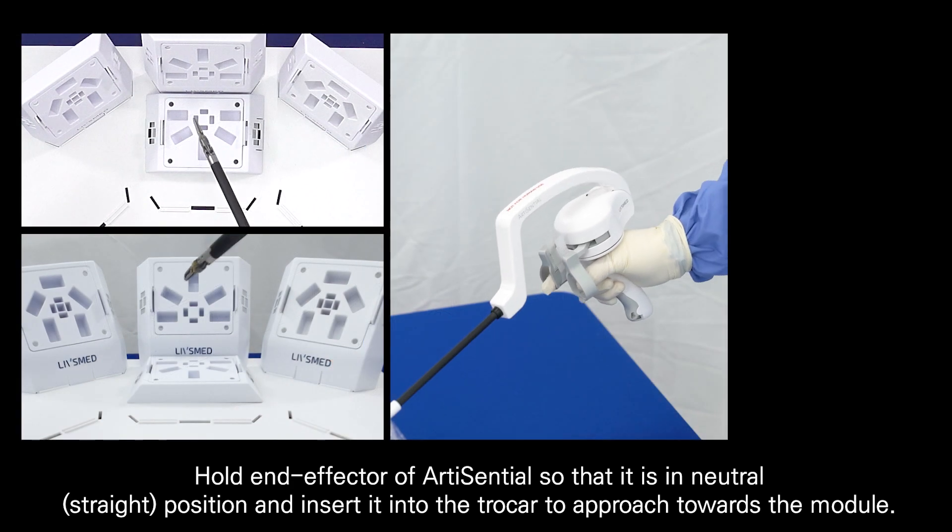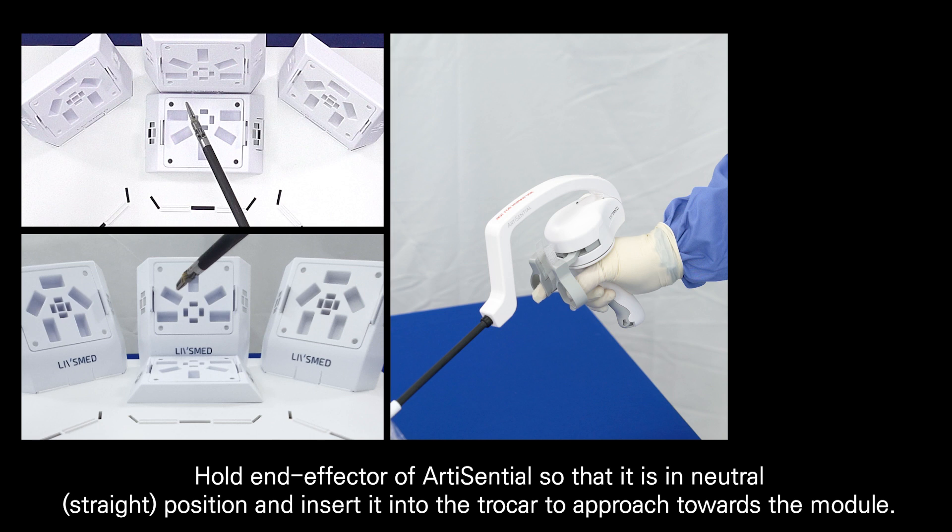Hold the end effector of ArtEssential so that it is in neutral position and insert it into the trocar to approach towards the module.